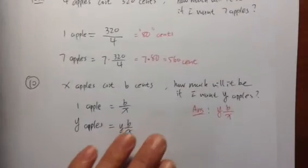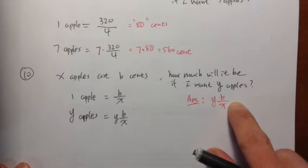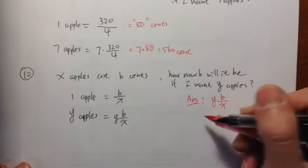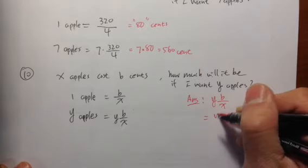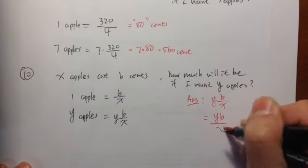It looks kind of different than what we have right here. When you have Y times B over X, you can put the Y on the top. So YB over X. So maybe that will be the answer.